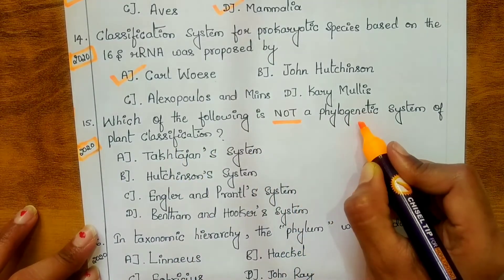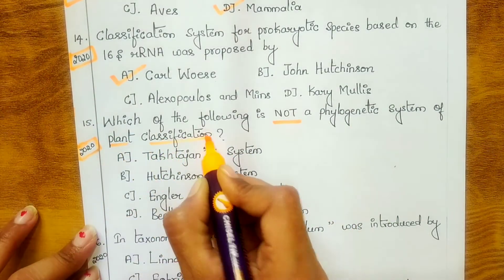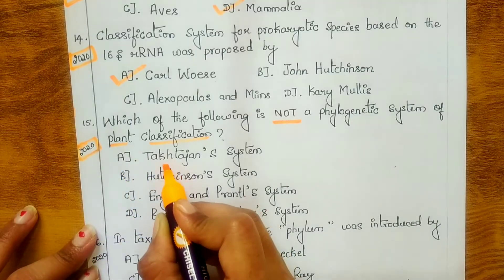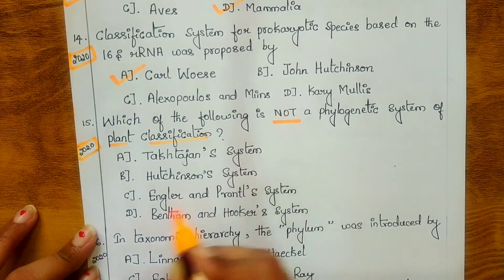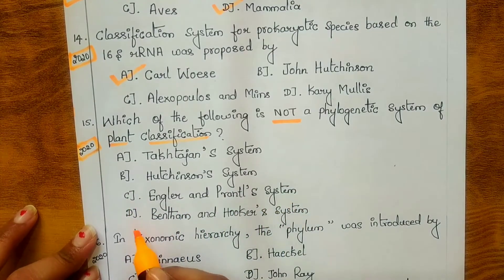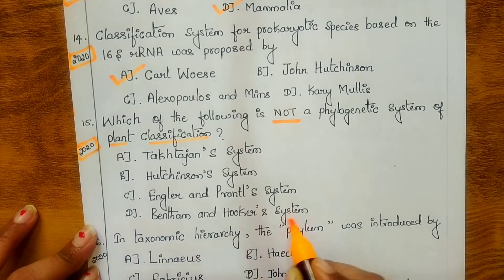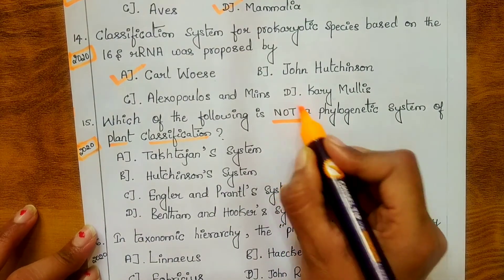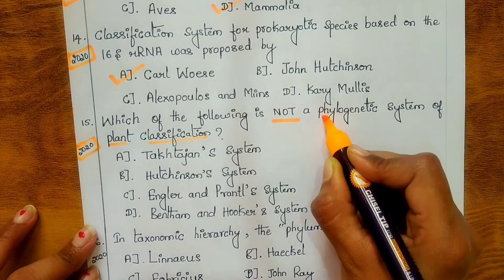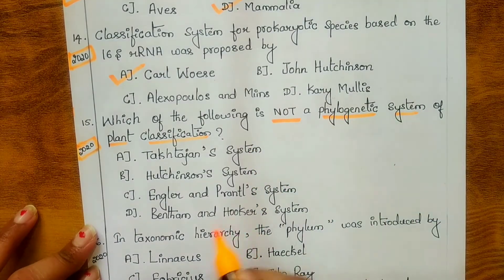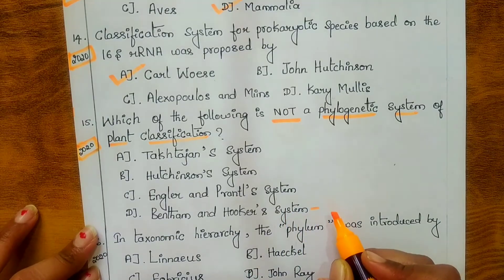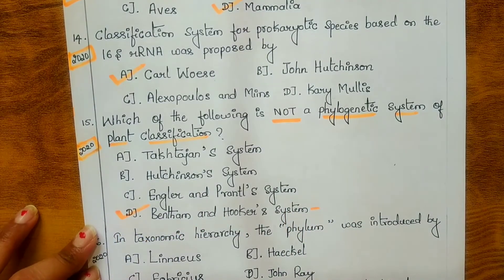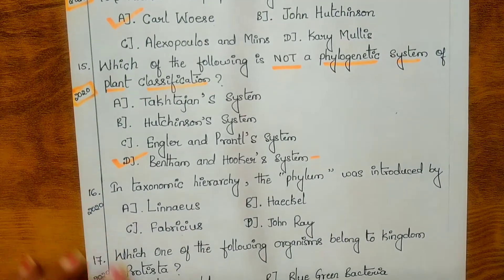Fifteenth question, from 2020 — note they are asking 'not': which of the following is NOT a phylogenetic system of plant classification? Options are: A. Takhtajan's system, B. Hutchinson's system, C. Engler and Prantl's system, D. Bentham and Hooker's system. The first three are all phylogenetic systems of classification. Bentham and Hooker's system is a natural system of classification, so it is the answer — it is NOT a phylogenetic system.